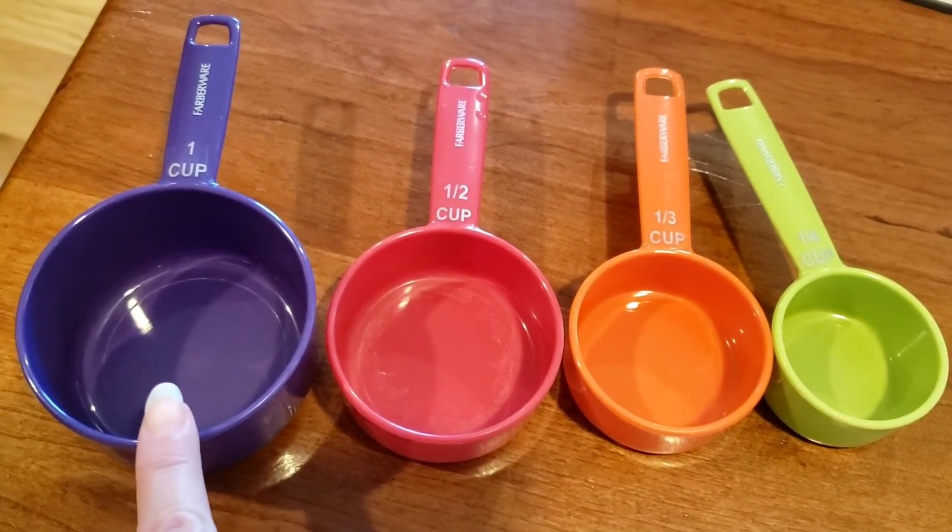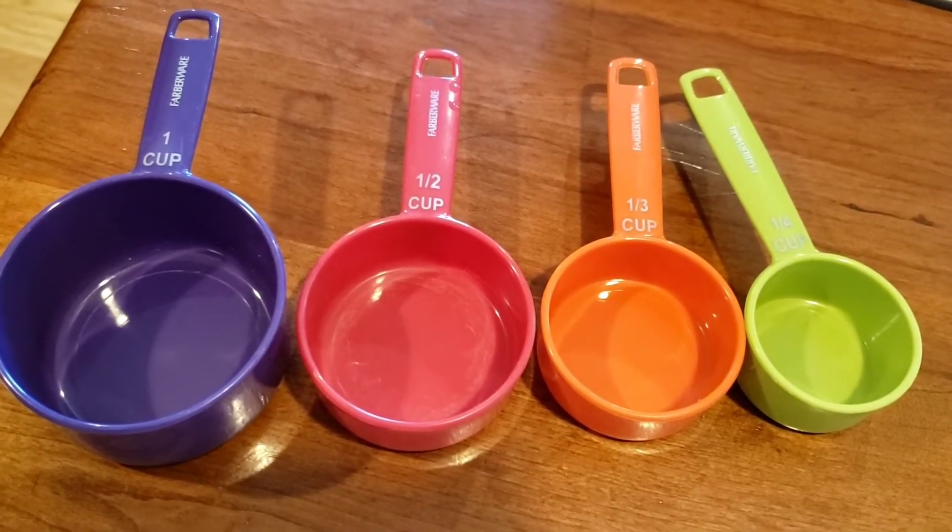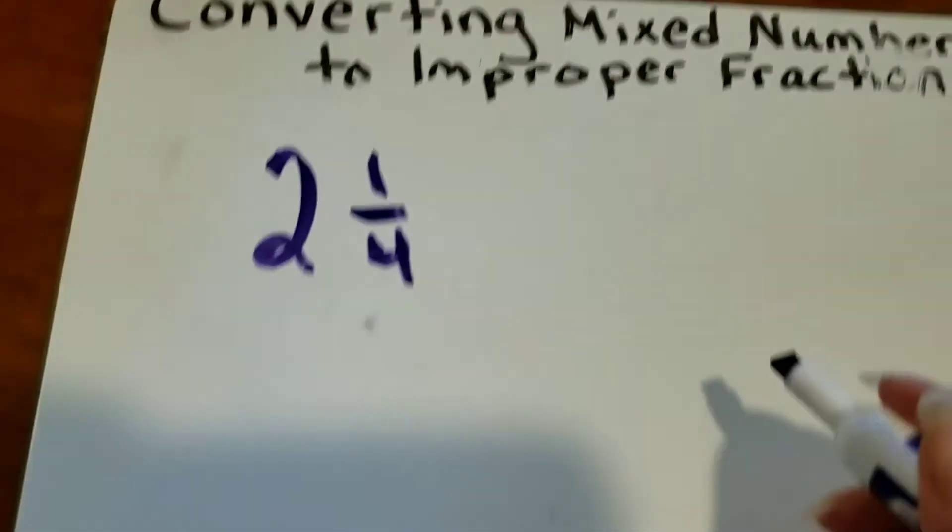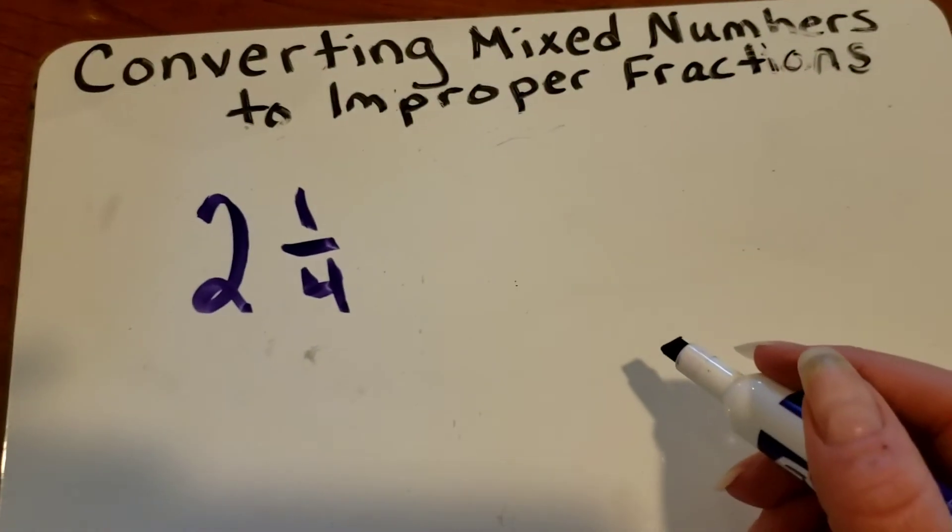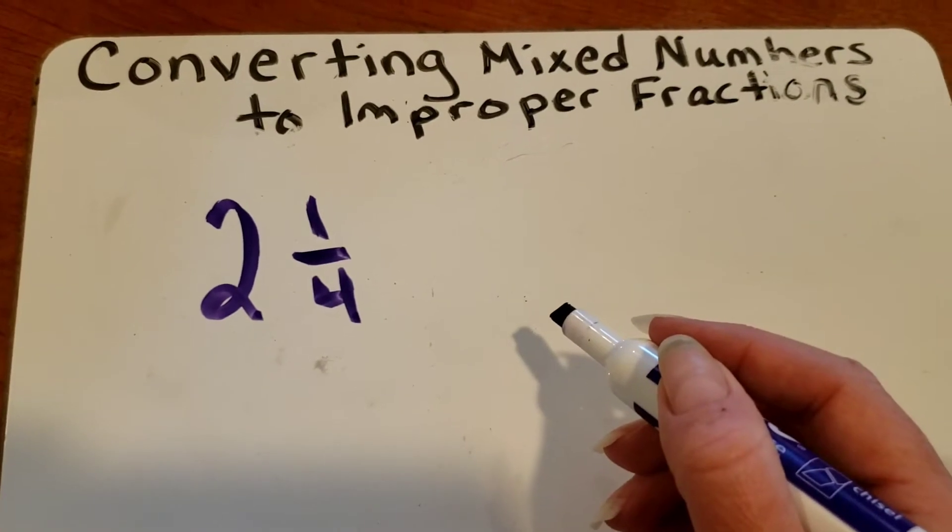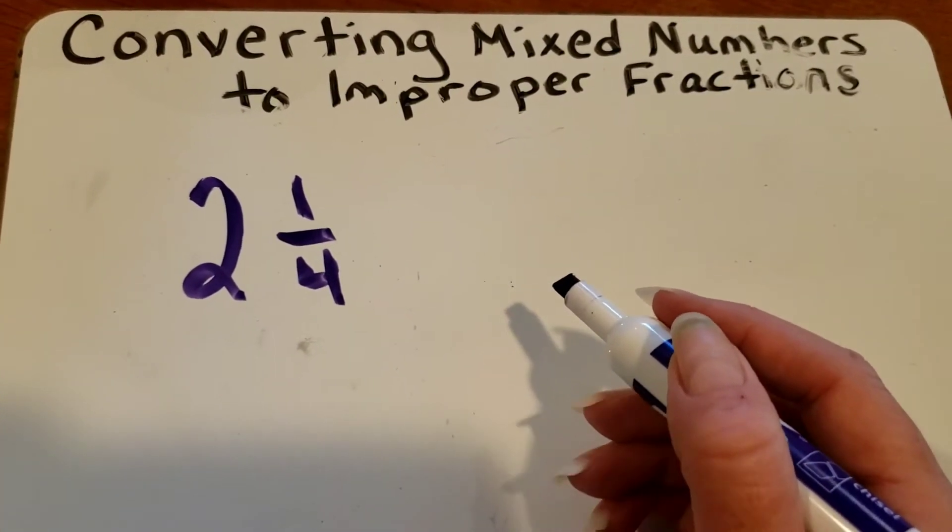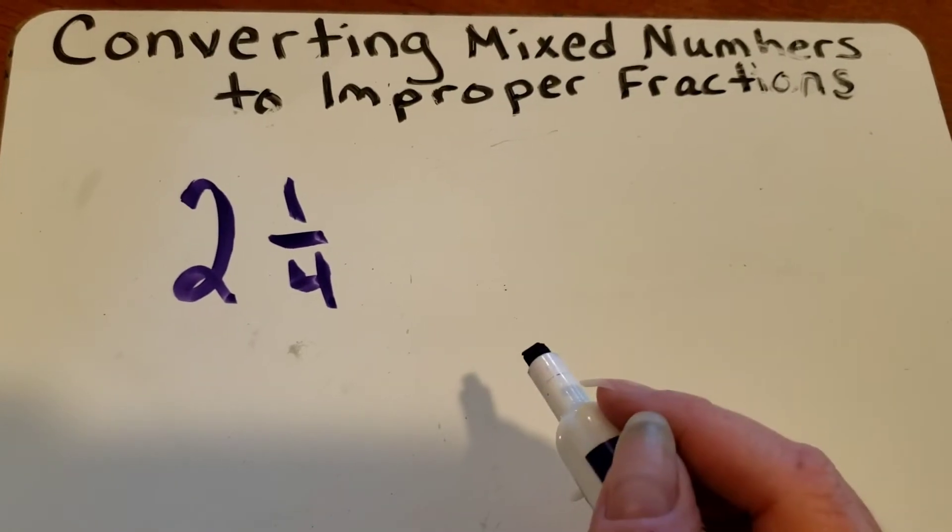Whenever you combine a whole number with a fraction you get a mixed number. So what we're going to do today is show you what the mixed number would look like if it was a fraction greater than one, otherwise known as an improper fraction. I'm going to show you two ways to do it.